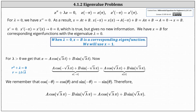Now let's consider lambda equals zero. For lambda equals zero, the differential equation becomes x double prime equals zero, and therefore the general solution is x equals a t plus b, a linear function. Using the condition x of negative pi equals x of pi, we have a times negative pi plus b equals a times pi plus b, which requires a to equal zero. If a is equal to zero, the solution is x equals b, and x prime equals zero. Using the condition x prime of negative pi equals x prime of pi gives zero equals zero, which is true but provides no new information. Therefore x equals b is the eigenfunction with eigenvalue lambda equals zero.